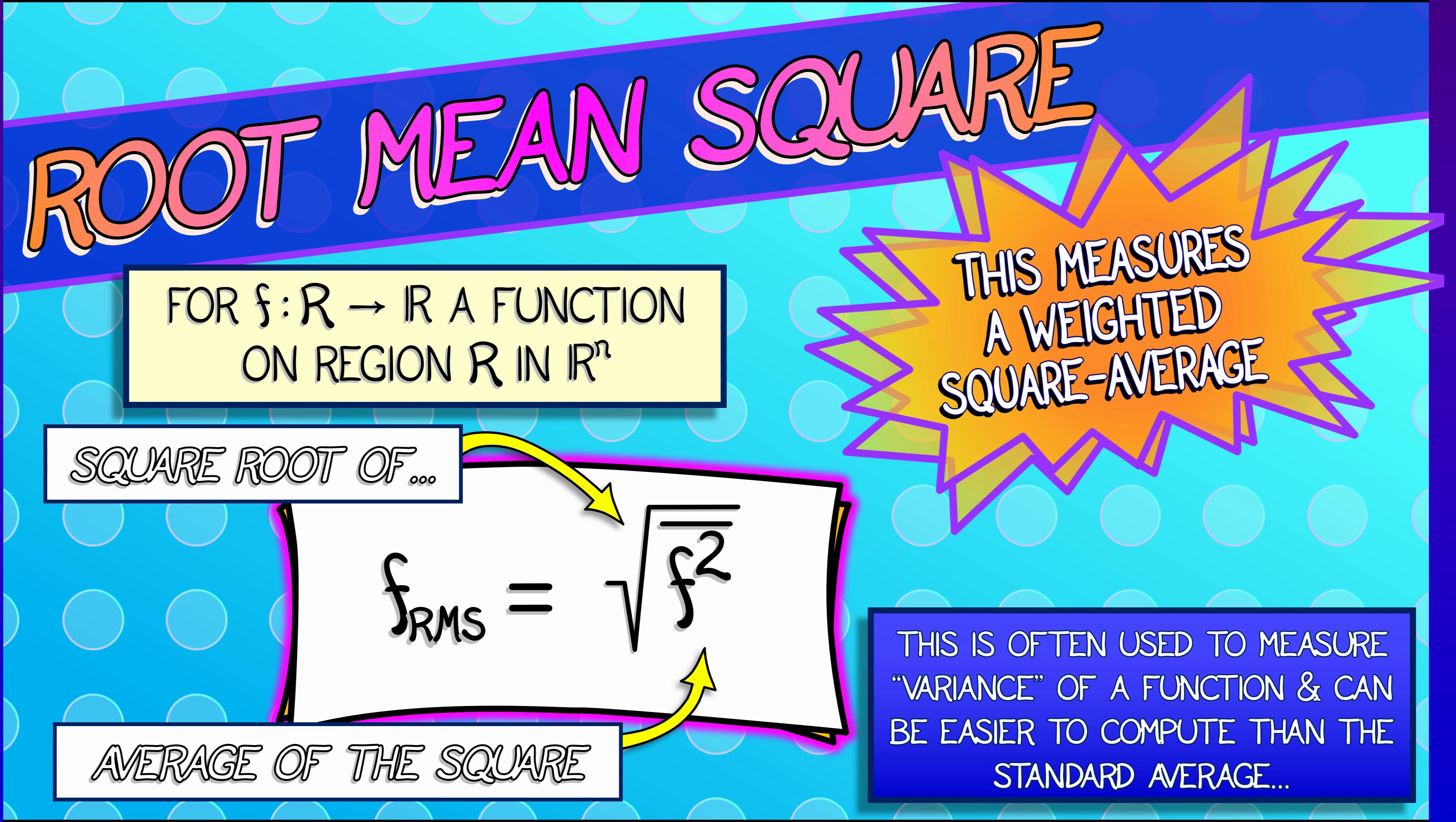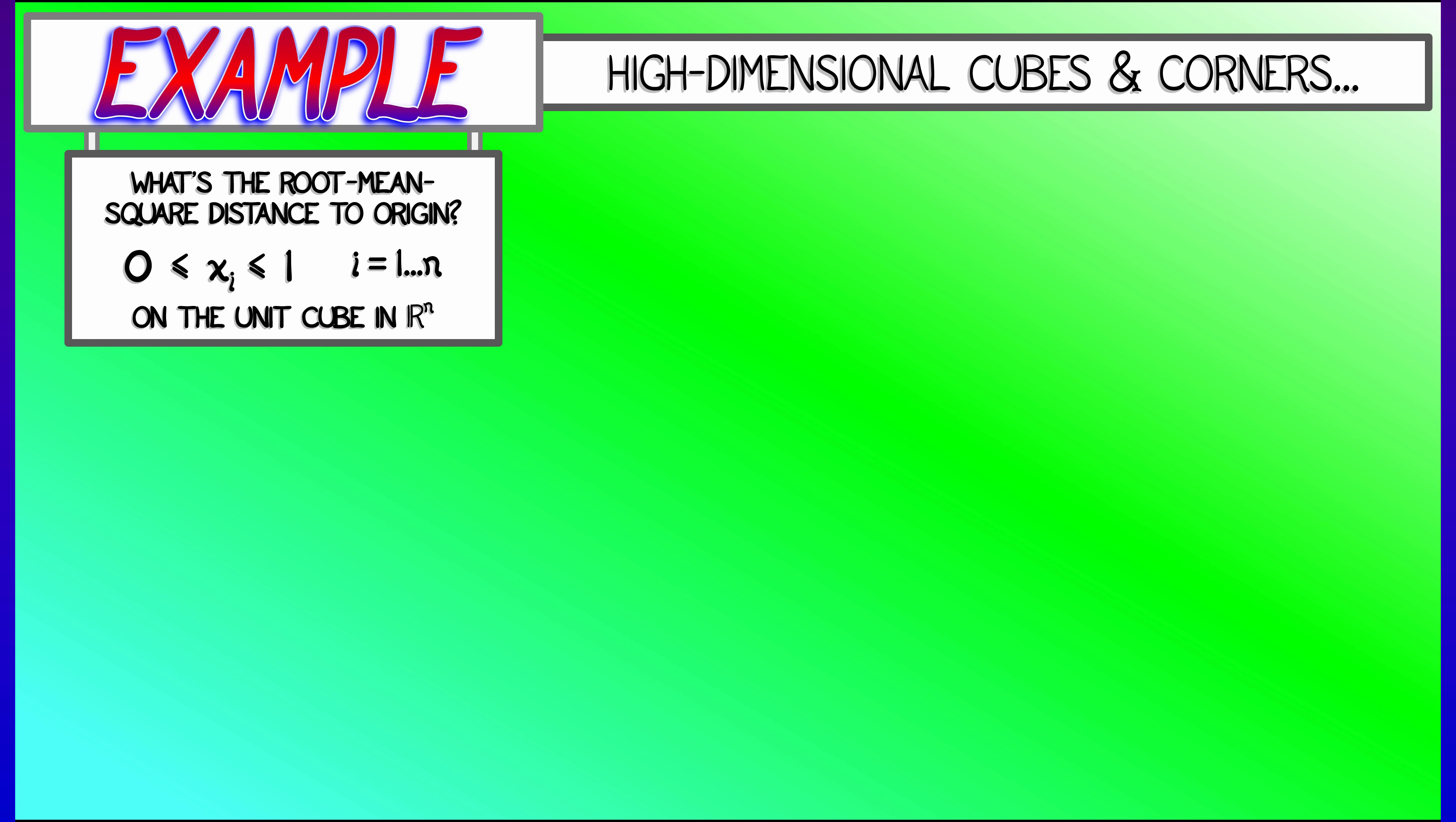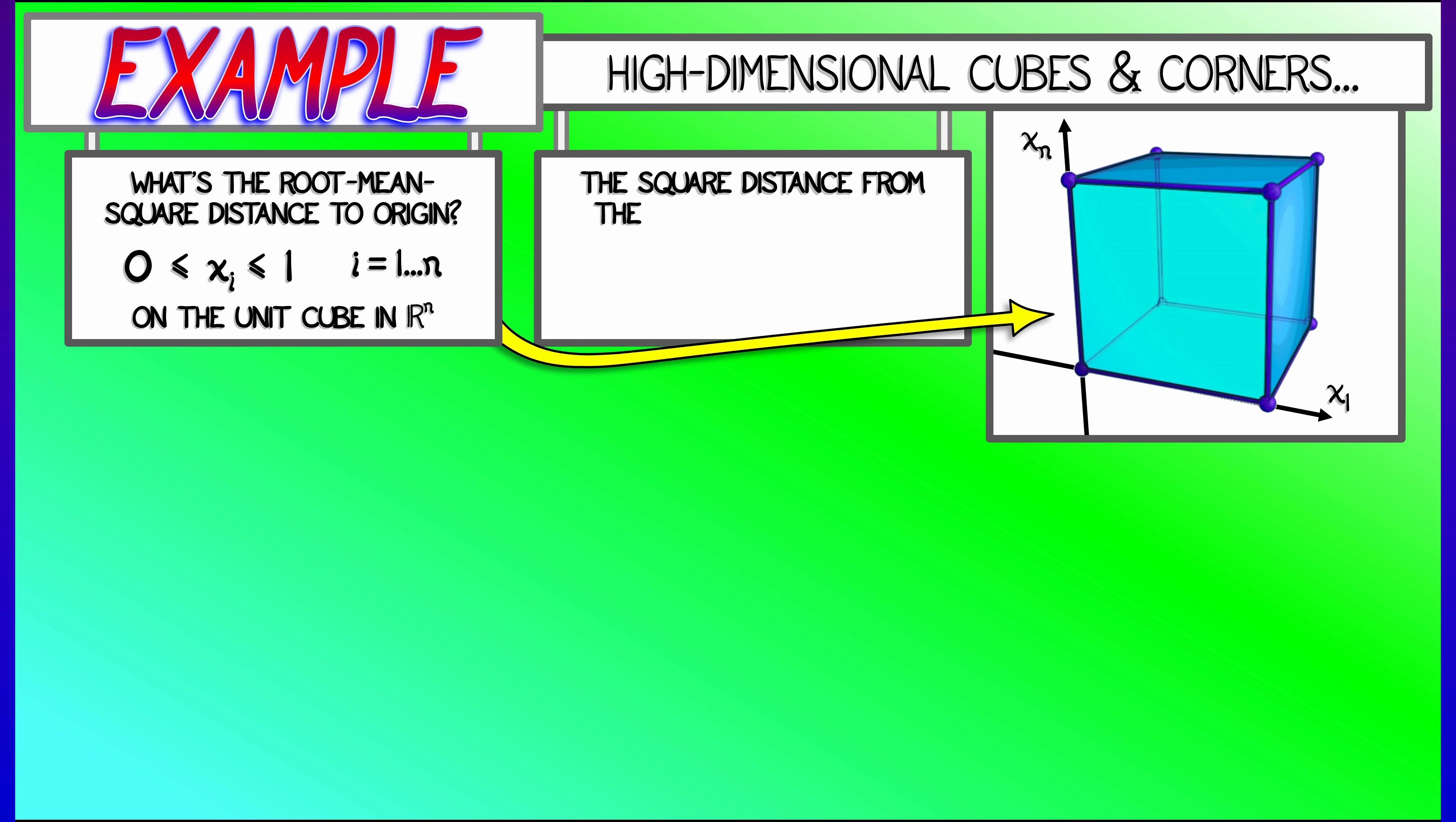Let's take a look at a simple example where we're doing a root-mean-square average over a high-dimensional region. Let's say we want to know the root-mean-square distance to the origin on the unit cube in R^n. So I've got a cube in n-dimensional space, side length is equal to 1. Let's specify exactly that each coordinate x_i ranges from 0 to 1.